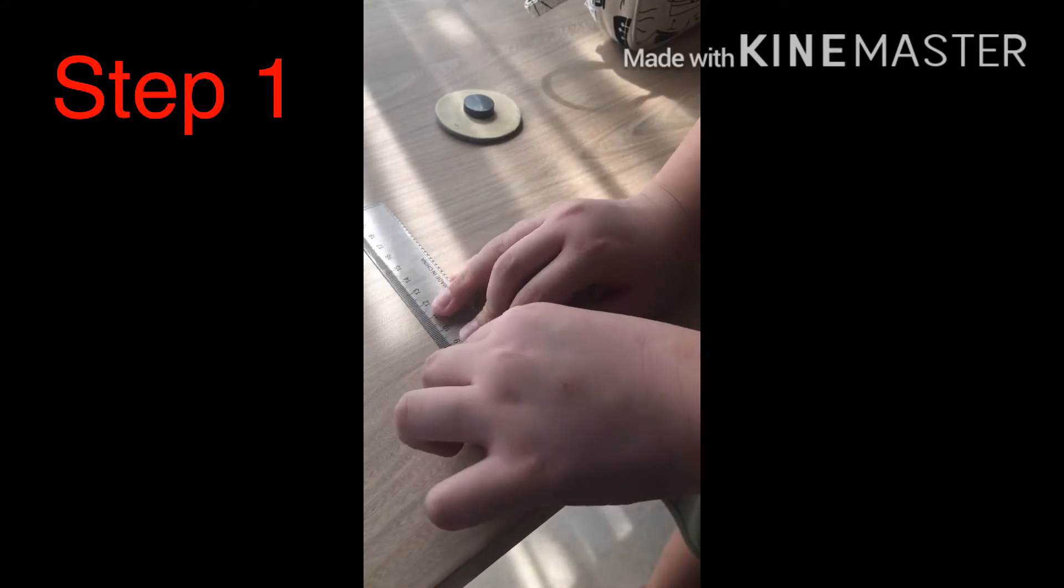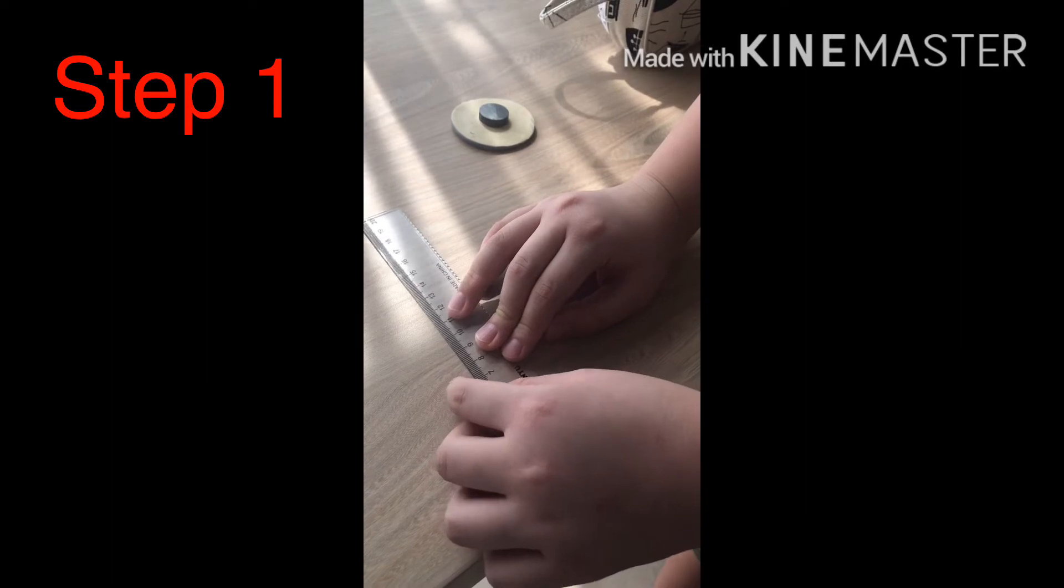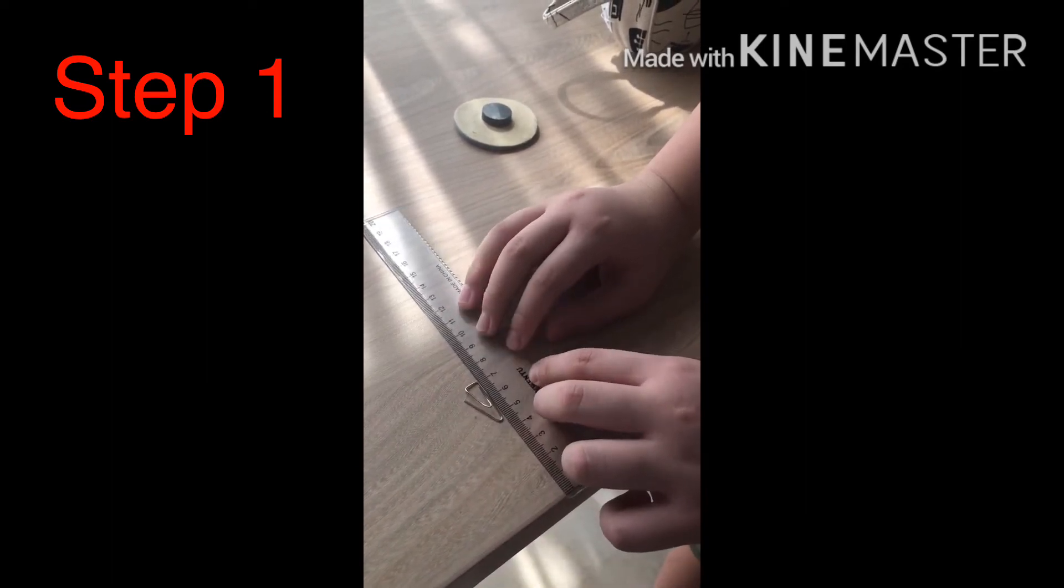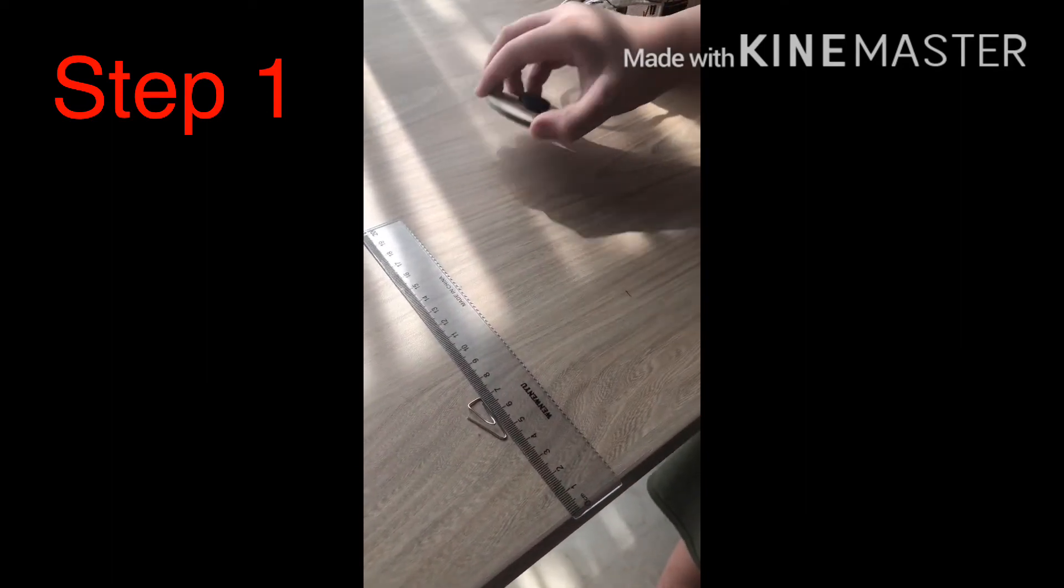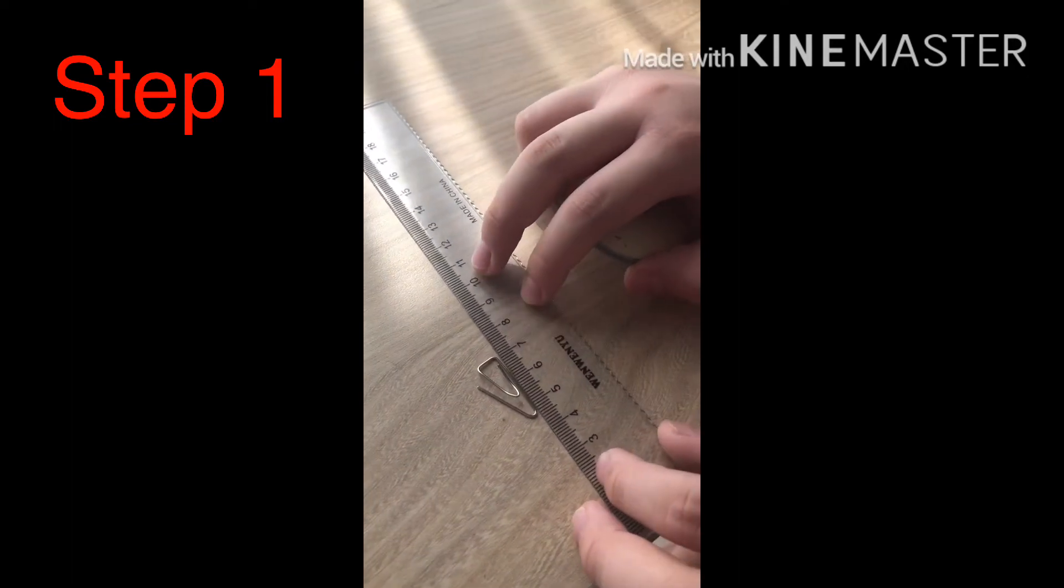So you put down the magnet first. You use two hands so you can do it easier. Okay, zoom in. That's how you do it - you put it at seven centimeters. By the way, also put it at the edge.